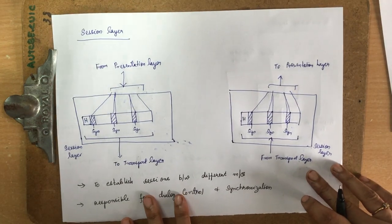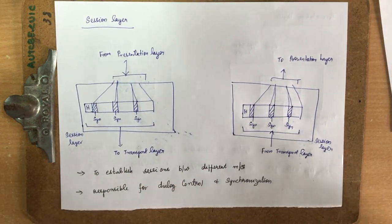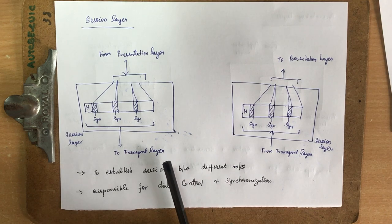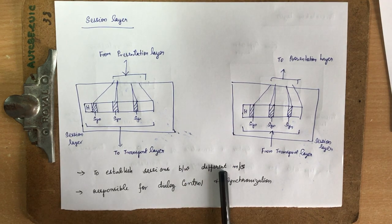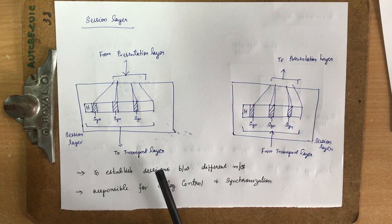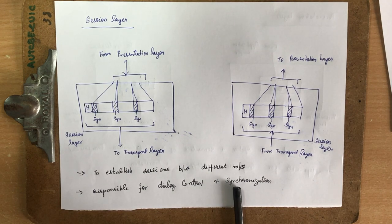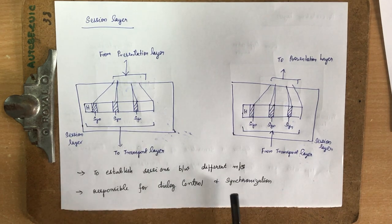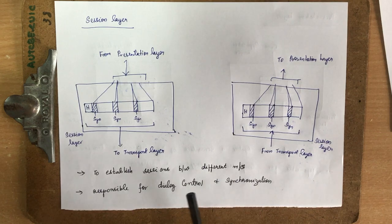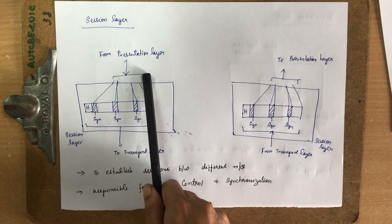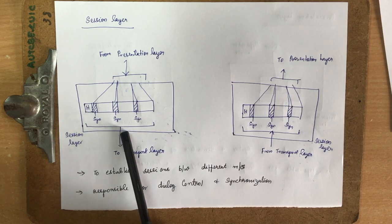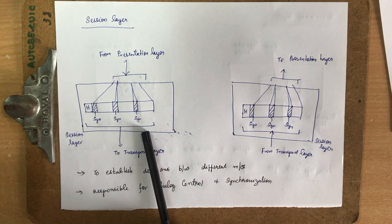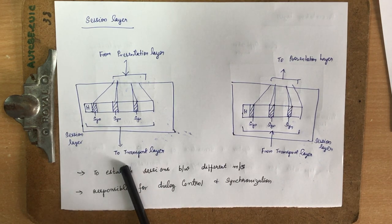The session layer is responsible for establishing sessions between two different networks. It ensures synchronization between sessions and handles dialogue control. When data is received, it adds synchronization bits to provide synchronization and then sends the data to the transport layer.